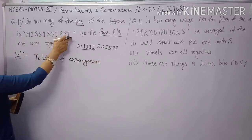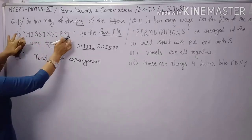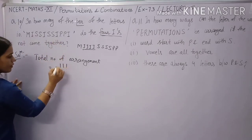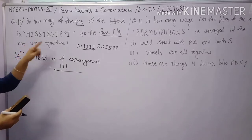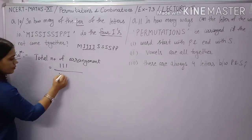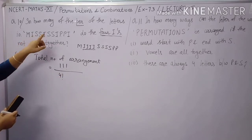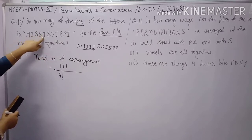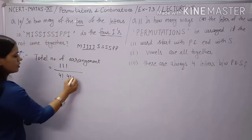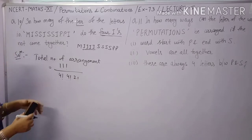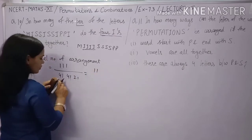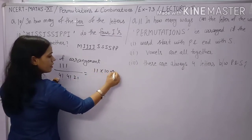Total arrangements of MISSISSIPPI = 11! / (4! × 4! × 2!), since S appears 4 times, I appears 4 times, and P appears 2 times. Calculating: 11 × 10 × 9 × 8 × 7 × 6 × 5 × 4! / (4! × 4! × 2!) = 34650.